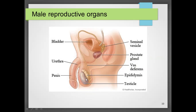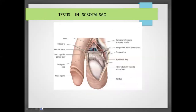Why is the testes the most important organ? It produces the gametes. Gametes are essential for the next generation. It is very important to understand why the testes is located outside the abdominal cavity.